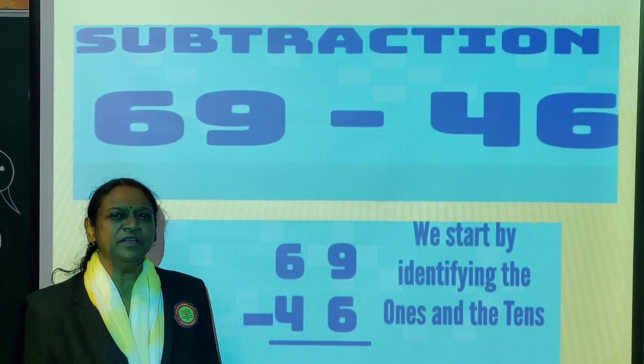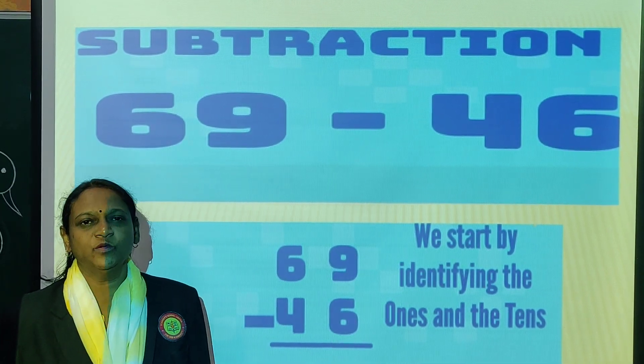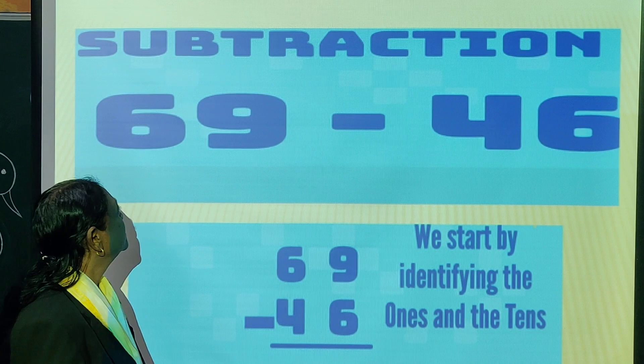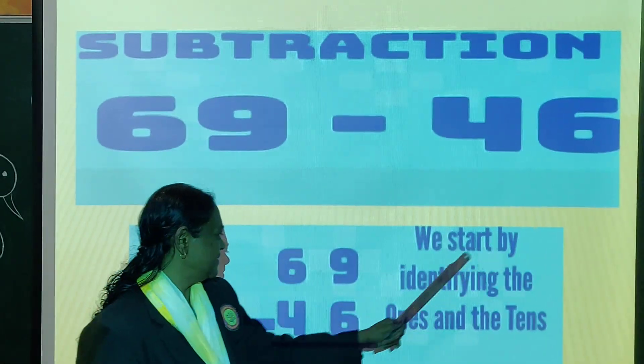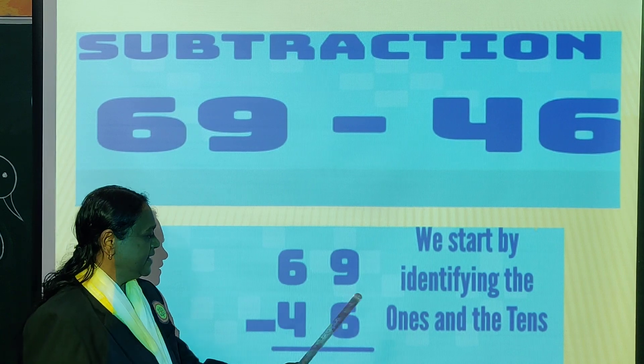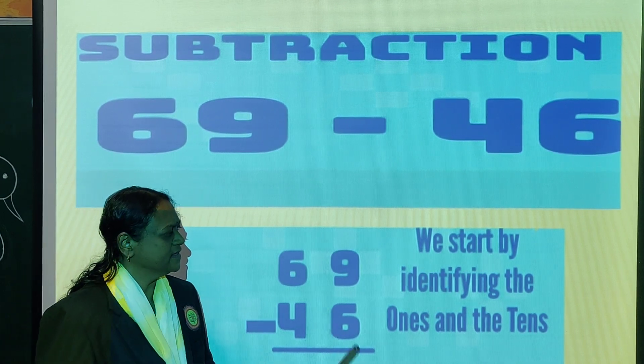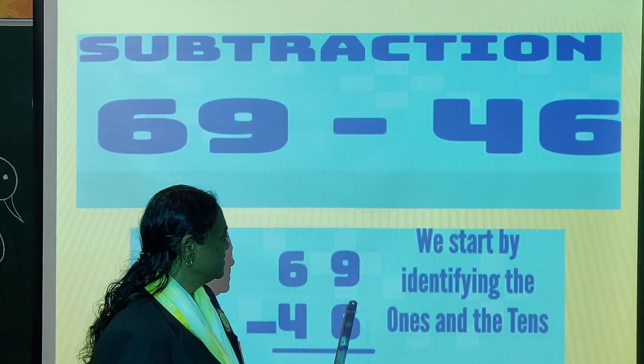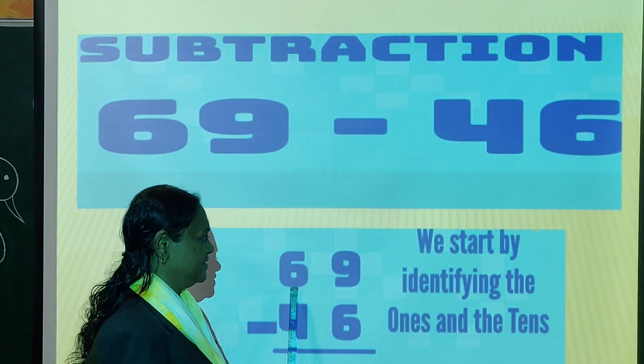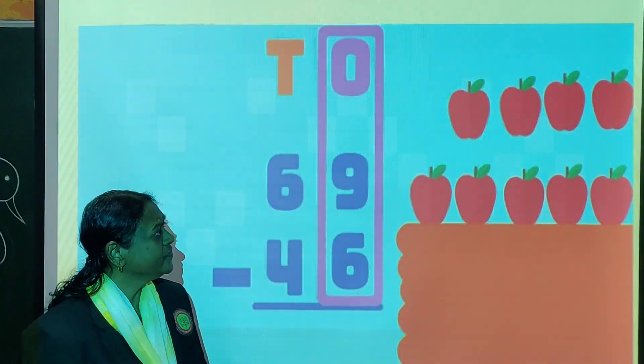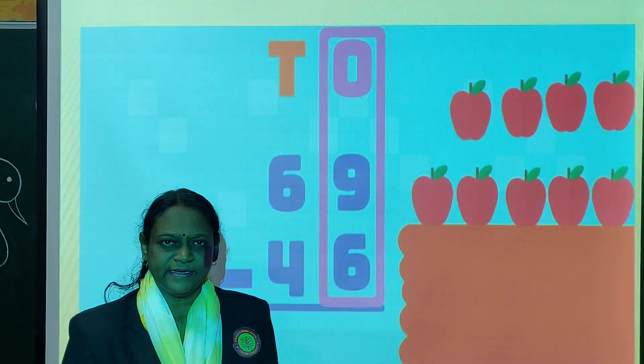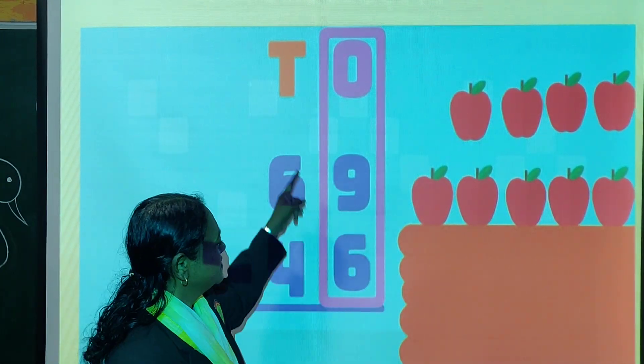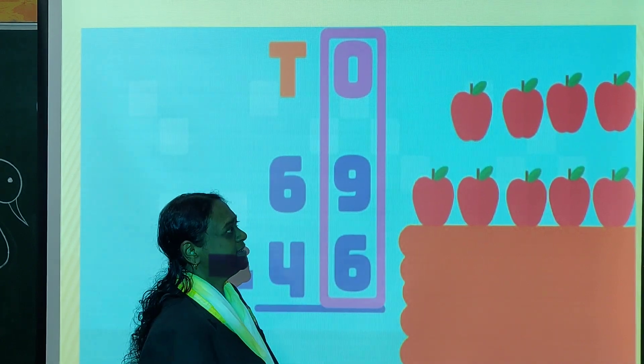Now with the example we will see how we will do the subtraction. Now this is 69 minus 46. Okay, now this is ones and this is tens. Now see, this is ones. So first we have to start from right side. Ones. This is 9 and this is 6.